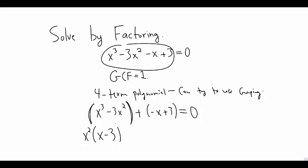For the second group, the GCF could be 1, but we can also use negative 1. When we factor out negative 1, what's left in the parentheses is x minus 3, which is preferable because it matches the parentheses from the first group.